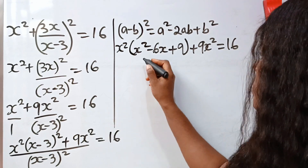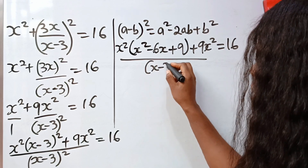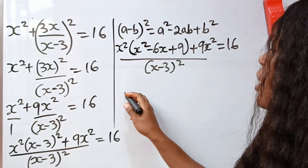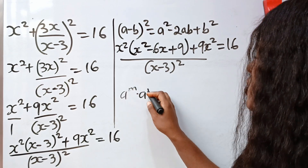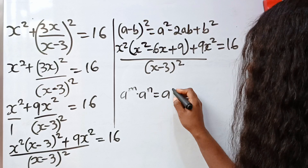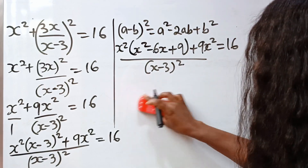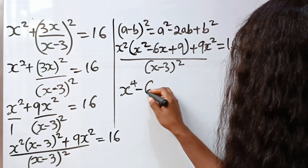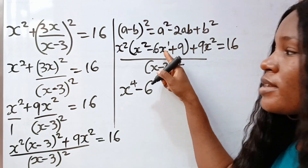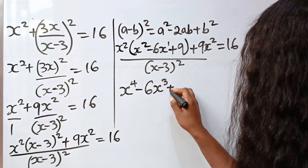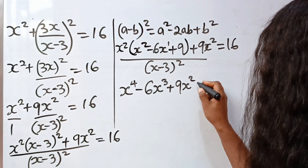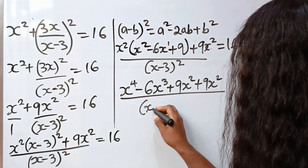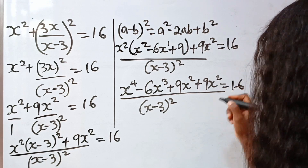Now let's open these brackets — remember everything is over x minus 3 squared. x squared times x squared: using the rule A to the power of M times A to the power of N equals A to the power of M plus N, this gives x to the power of 4. Then minus 6x to the power of 3, plus 9x squared plus 9x squared — everything divided by x minus 3 squared — equal to 16.